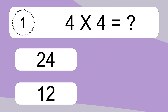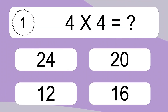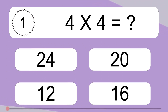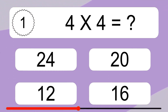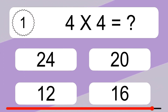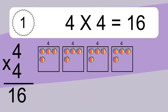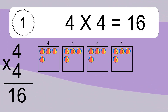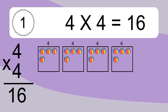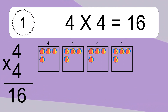4 times 4 equals what? 4 times 4 equals 16. We have 4 boxes, and each box has 4 colorful balls inside. If you count all the balls in all the boxes together, you will have 4 times 4 balls. This equals 16 balls.